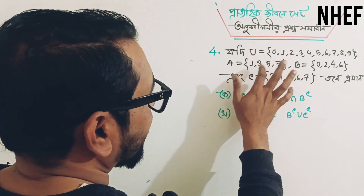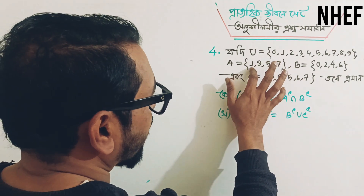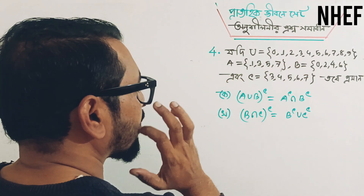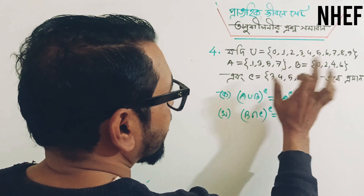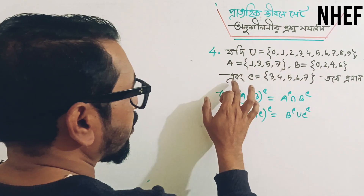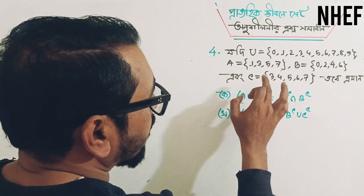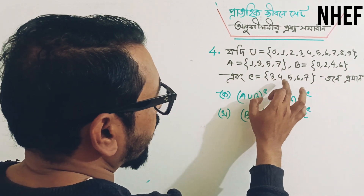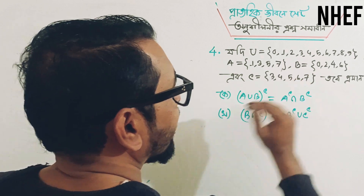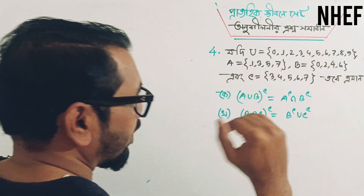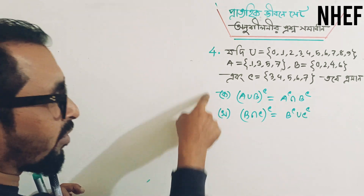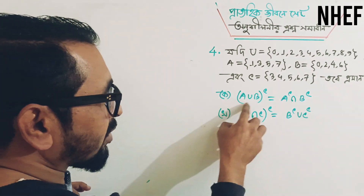We will see set A is 1, 3, 5, 7. Set B is 3, 5, 7. Very interesting — 3, 4, 5, 6, 7.